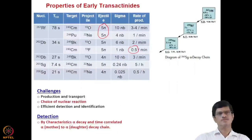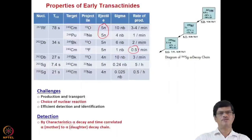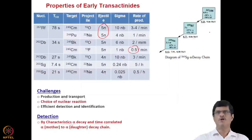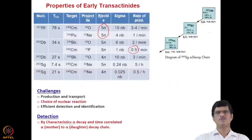Challenges in transactinide chemistry include production and transport, since cross sections are very low — in the nanobarn range or less — and efficient detection and identification are also required. Detection is done by characteristic alpha decay and time-correlated alpha counting from mother to daughter in the decay chain. For example, 263-Seaborgium (half-life 0.9 seconds) decays to 259-Rutherfordium (half-life 3 seconds), which decays to 255-Nobelium (half-life 3.1 minutes).